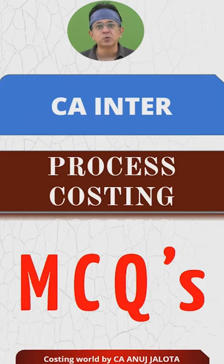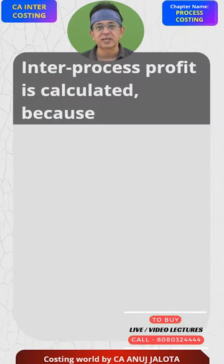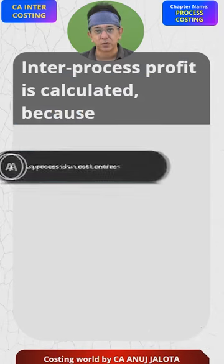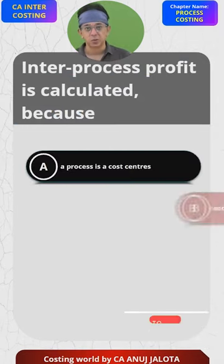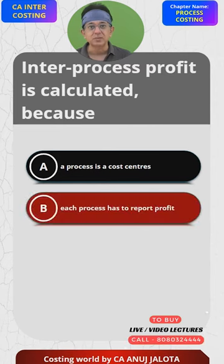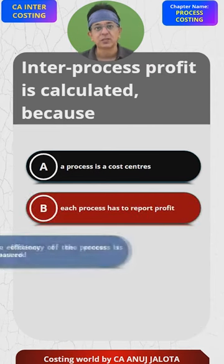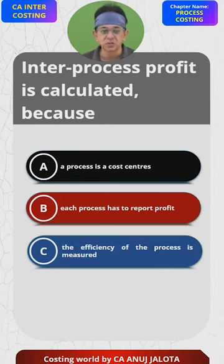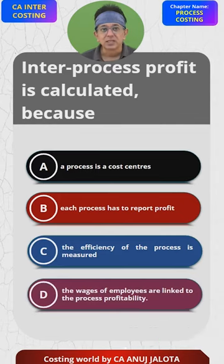Inter MCQ on process costing. Inter process profits are calculated because: A. A process is a cost center. B. Each process has to report profit. C. The efficiency of the process is measured. D. The wages of the employees are linked to the process profitability.